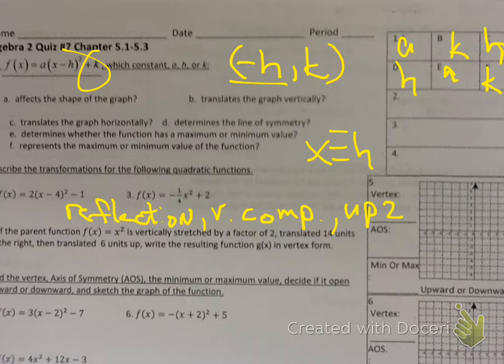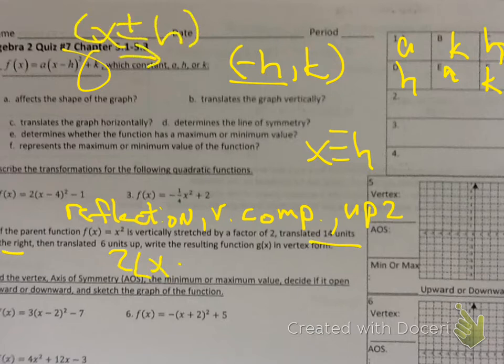Number 4: vertically stretched by a factor of 2 — that's the number that should go in front. 14 units to the right means I need to put x minus 14, then squared, and then you could say plus 6. That's your answer for number 4. These translations — you need to understand them; they're going to appear.